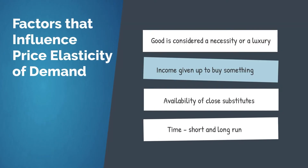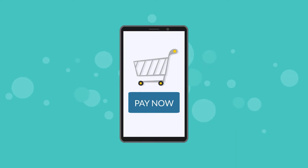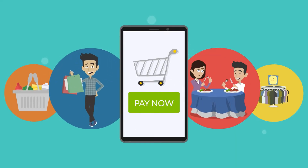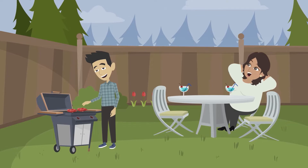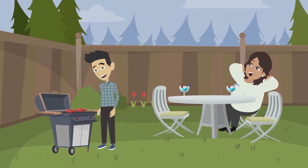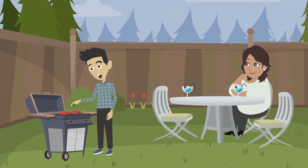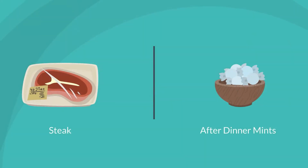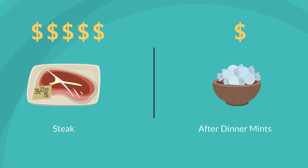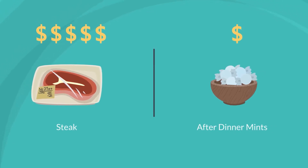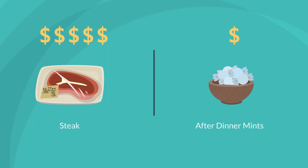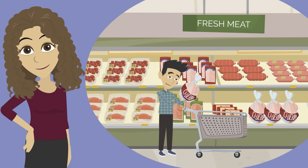A second factor is the portion of your income you give up to buy something. Anything you purchase takes a portion of your income — it may be a small portion or a large portion. Say that for dinner you regularly eat steak, followed by an after-dinner mint. While you consider both an essential part of a good meal, one important difference is the price relative to your grocery budget. Steak tends to be much more expensive than mints. If the price of steak and mints both doubled, you'd likely continue to buy mints, but perhaps choose something else as your main course. The demand for steak tends to be more price elastic than the demand for after-dinner mints.